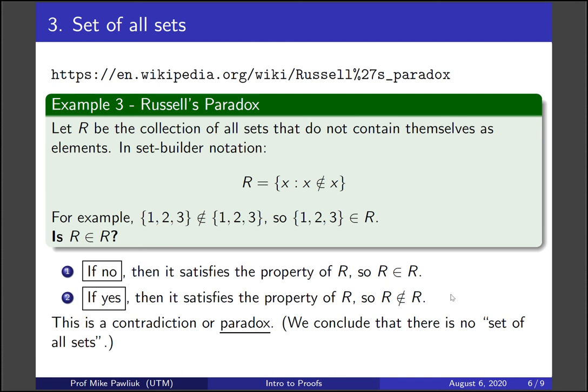So we conclude from this that there's no set of all sets. There's some formal thing going on here — the question is whether this construction is even allowed. It's allowed only if you have a set of all sets, so this is actually a complicated proof by contradiction that there is no set of all sets.